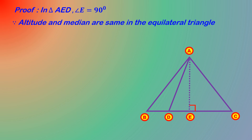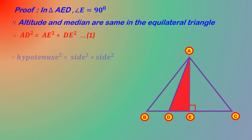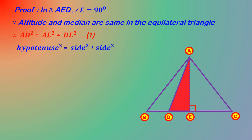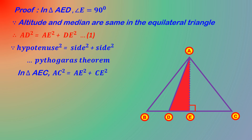Therefore AD square is equal to AE square plus DE square — this is equation number 1. By Pythagoras theorem, the hypotenuse square equals the sum of the squares of the sides. AD is the hypotenuse, and DE and AE are the sides. In triangle AEC, AC square is equal to AE square plus CE square.